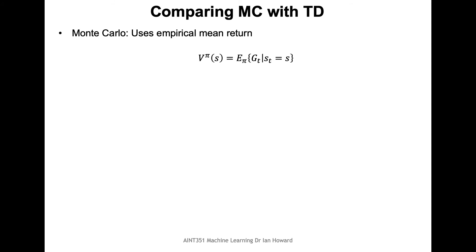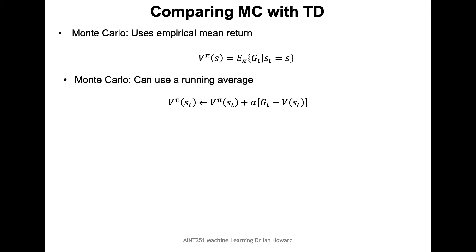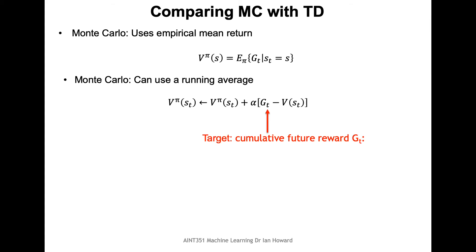Thinking again about Monte Carlo — it uses the expectation of the actual final gain, the future reward we're going to get from a given state. We can run that using a running average; we don't need to calculate all gains across all episodes and divide by the total number. The updated value of a particular state is the current value plus a learning rate multiplied by the total value at that episode minus what we had up to that point.